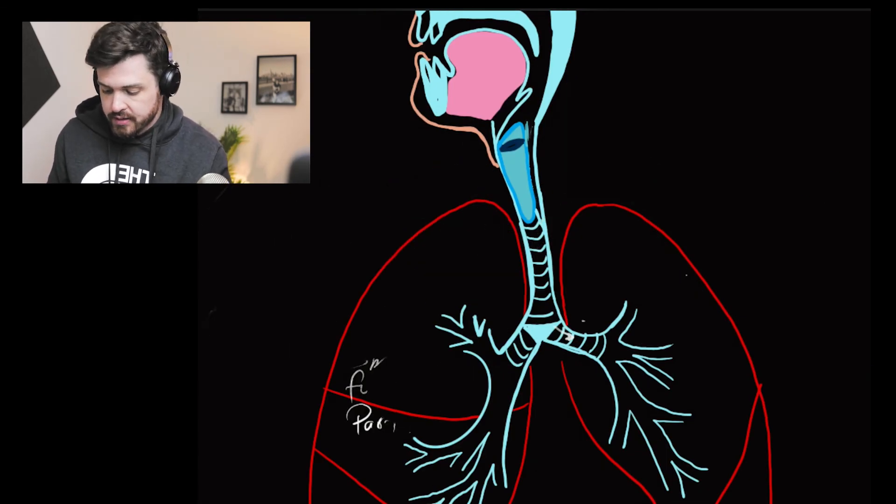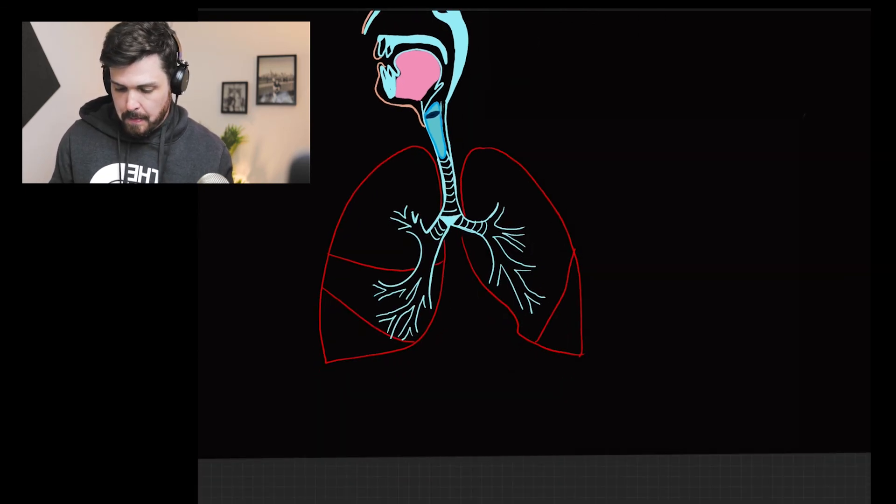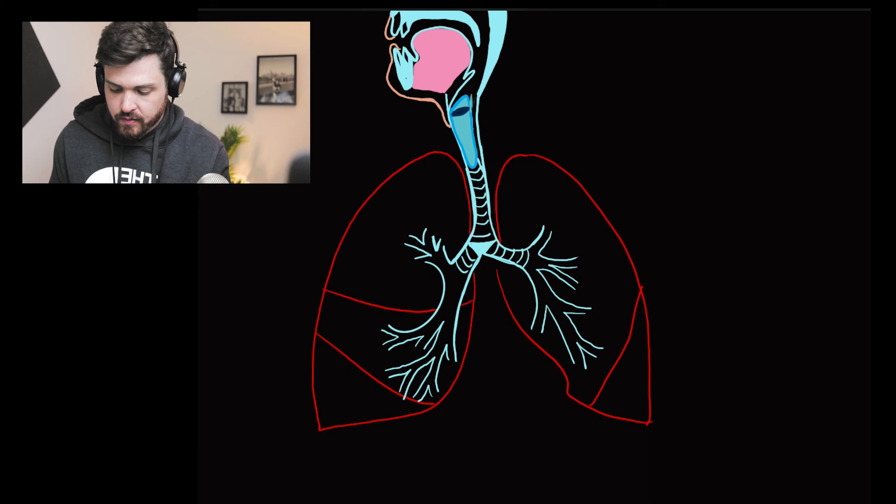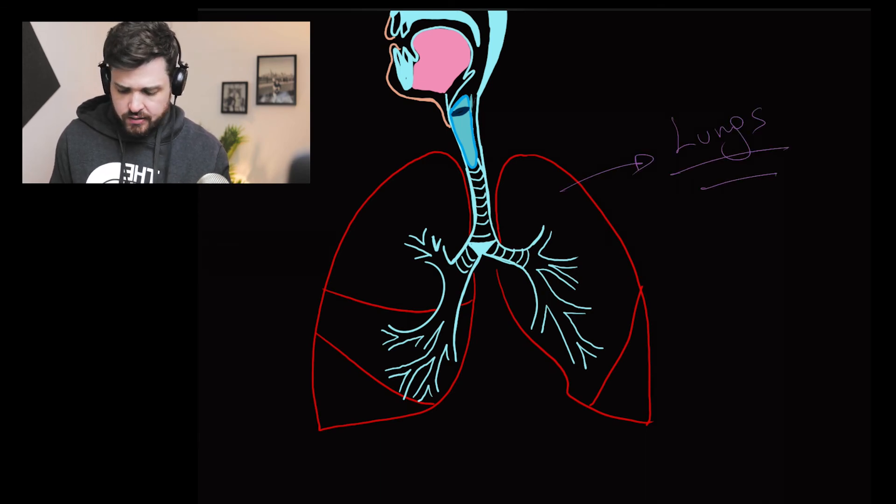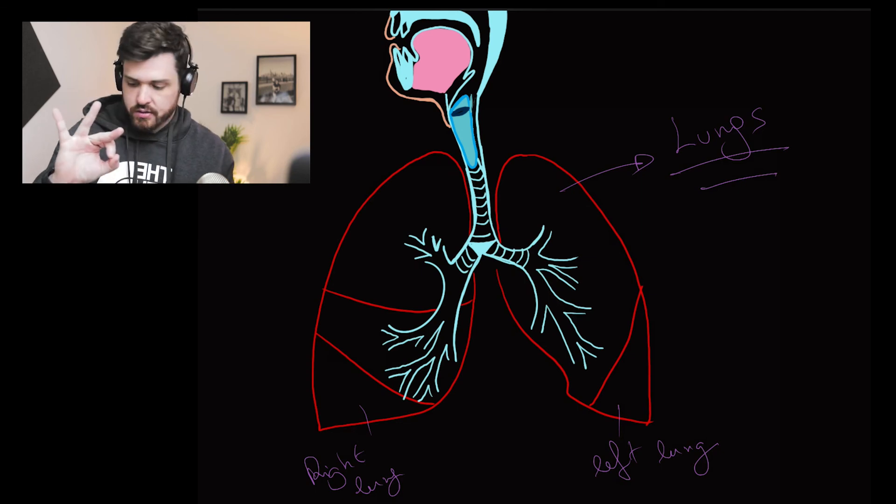In the lower respiratory tract, we have the lungs. Os pulmões. We have two lungs, the right lung and the left lung. The right lung has three lobes.